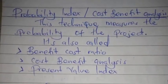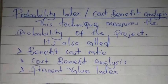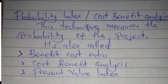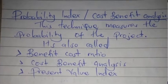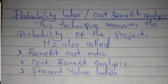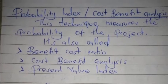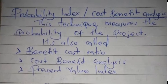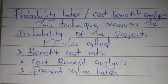Probability index, also known as the cost benefit analysis, is a technique which measures the profitability of a project. It measures the costs and the benefits from the project. It's also called cost benefit ratio, cost benefit analysis, or the present value index.